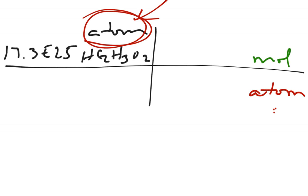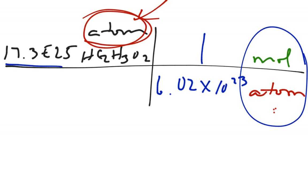Alright, whenever I have an atom-mole ratio, my atoms are always 6.02 times 10 to the 23rd. My moles is always 1. So I'd go 17.3 times 10 to the 25th times 1, divided by 6.02 times 10 to the 23rd. That is going to give me 287.375 moles of acetic acid.